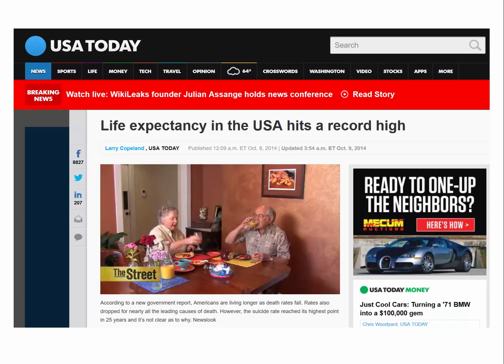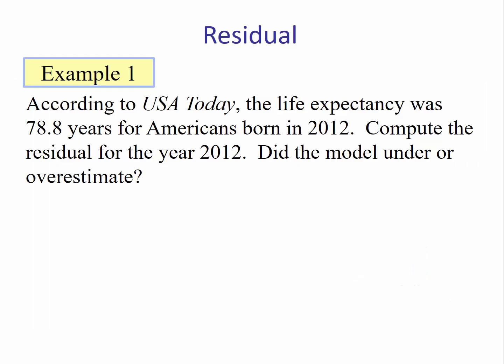USA Today in 2014 estimated that life expectancy in the U.S. hit a record high at the time. According to USA Today, the life expectancy was 78.8 years for Americans born in the year 2012. Compute the residual for the year 2012. Did the model under or overestimate?